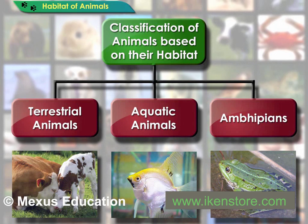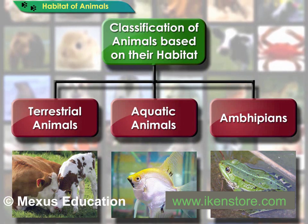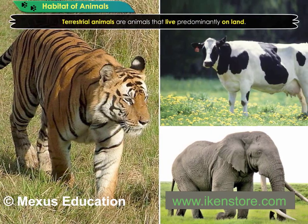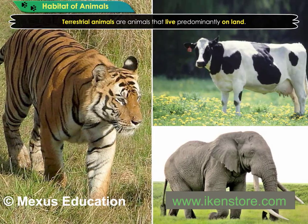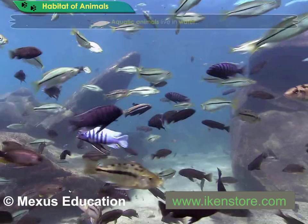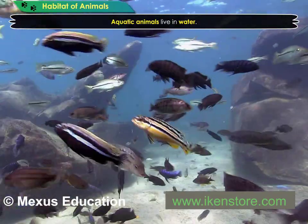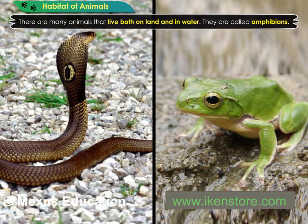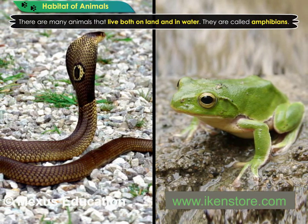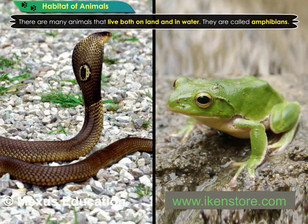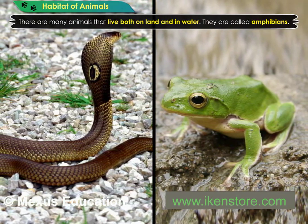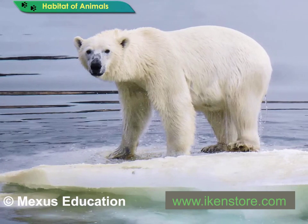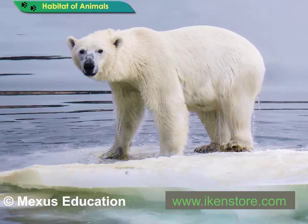Depending on their habitat, animals can be classified into different types. Terrestrial animals are animals that live predominantly on land. Aquatic animals live in water. There are many animals that live both on land and in water — they are called amphibians. Terrestrial animals have fur on their body, move mainly using their legs, and have well-developed lungs and sense organs.